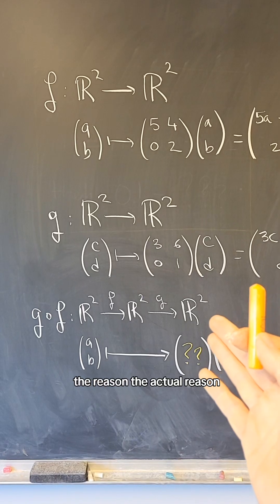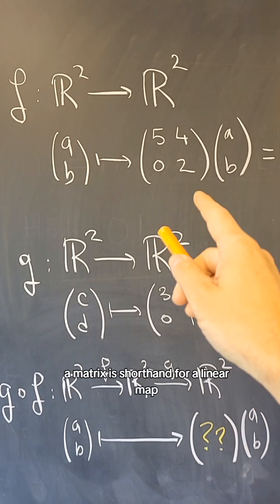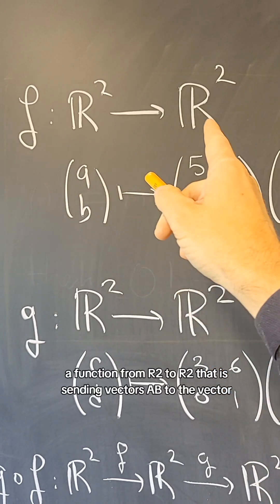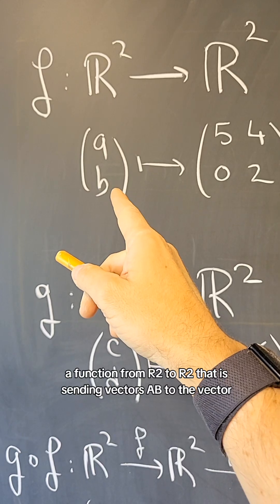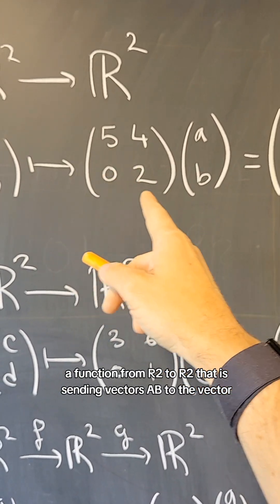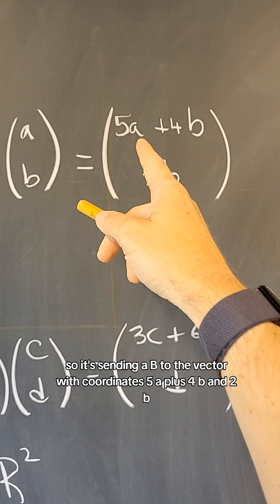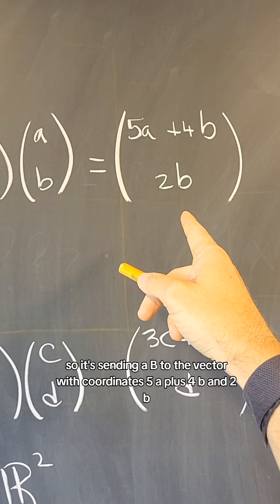The reason, the actual reason, comes from linear algebra. A matrix is shorthand for a linear map, a function from R2 to R2 that is sending vectors AB to the vector that is this matrix times that vector, so it's sending AB to the vector with coordinates 5A plus 4B and 2B.